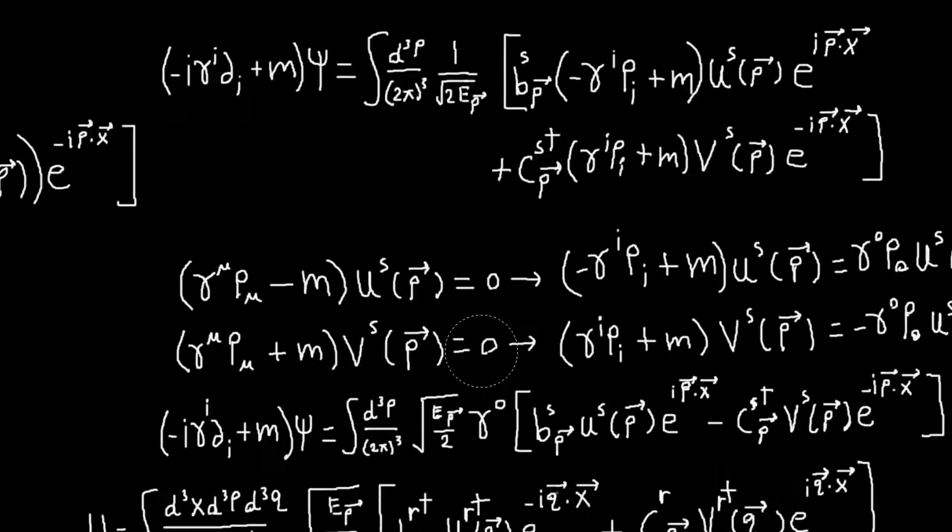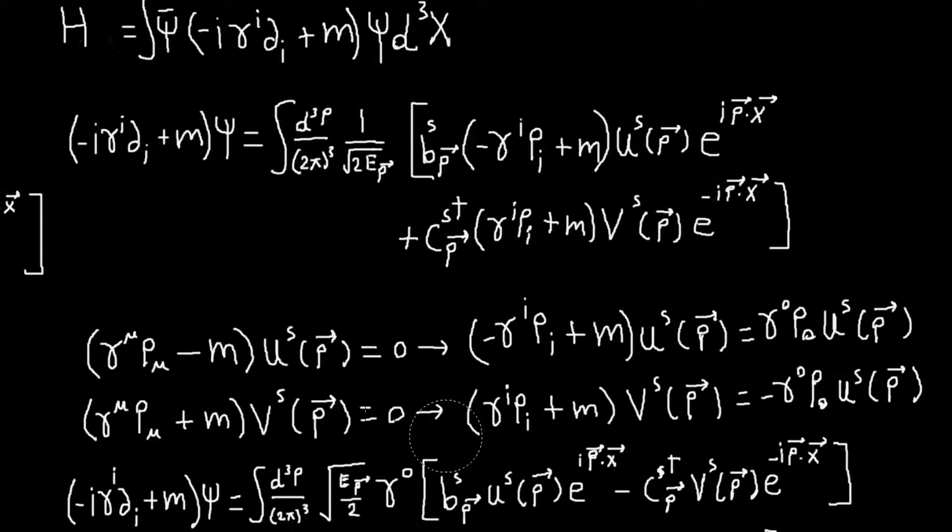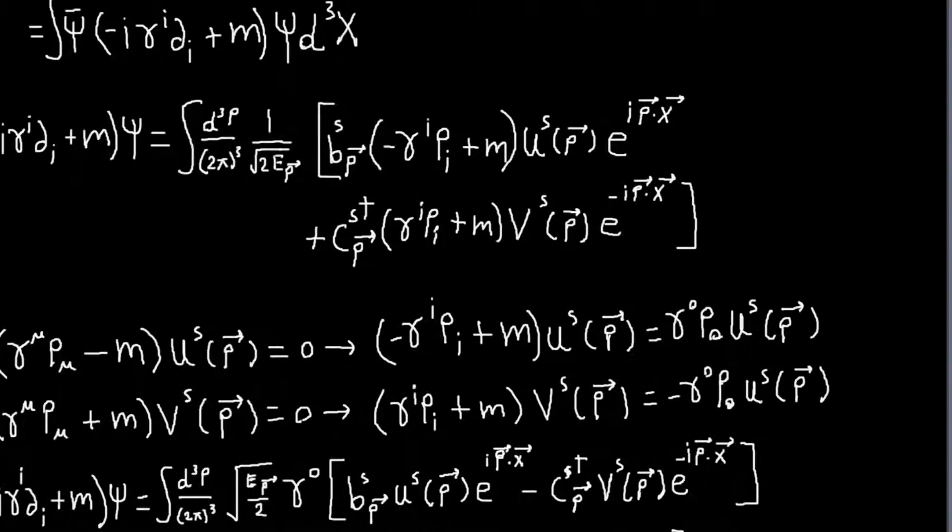So I just get this thing down here. And so p zero is e_p, so I get, you know, e_p times whatever square root of e_p is square root of e_p. And then I have my gamma naught here, and this. And so that's all we need to do for that term.